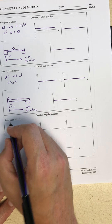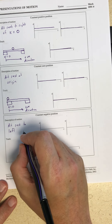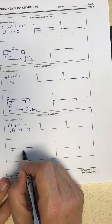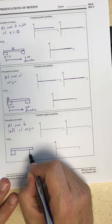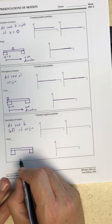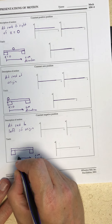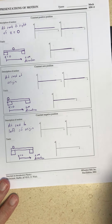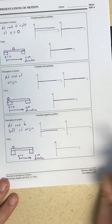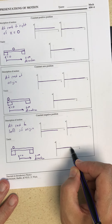Constant negative position: that is an object at rest to the left of the origin. I draw a level track — there isn't any acceleration to cause motion. I mark the zero point and the direction x increases. The ball begins and remains to the left of the origin, so it has some constant negative coordinate value. Since position is not changing, velocity versus time is always zero, and since velocity is not changing, acceleration versus time is always zero.